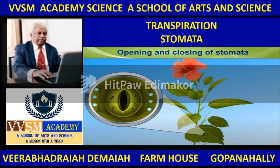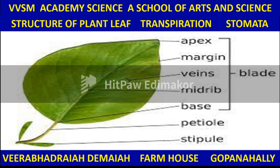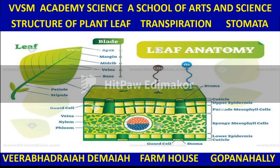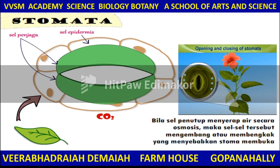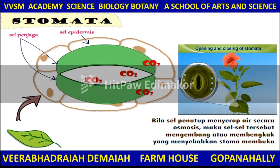The leaf anatomy covers the opening and closing of stomata, apex, margin veins, midrib, base, petiole, and stipule. The anatomy of the plant is also important in understanding transportation in plants. We will discuss leaf anatomy in detail.